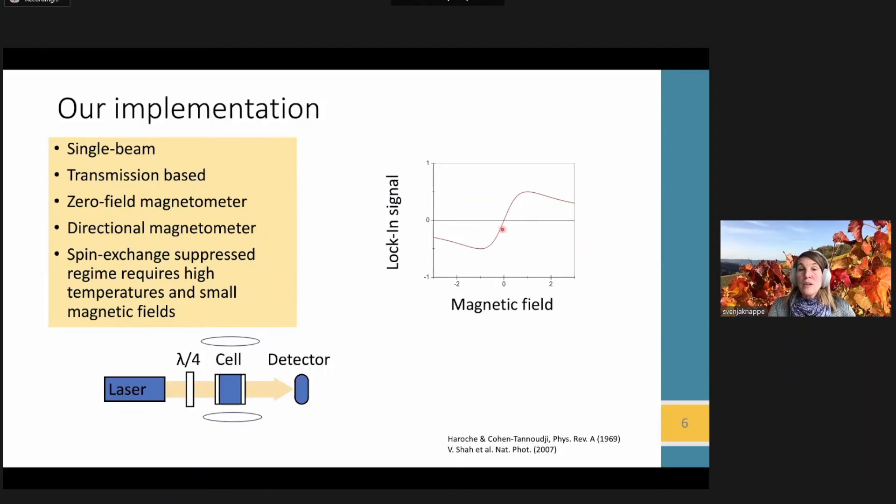We want this slope to be as steep as possible. So we operate in a regime where collisional broadening due to spin exchange is suppressed, but it requires high vapor densities, so high cell temperatures and very low magnetic fields. So we do currently need to work in a shielded environment and we need to add compensation coils to compensate out those ambient fields. And then in order to remain at this steep zero crossing, we operate in what we call closed-loop regime where we feedback the signal to the modulation coils to make sure we're always staying right here on the zero crossing.